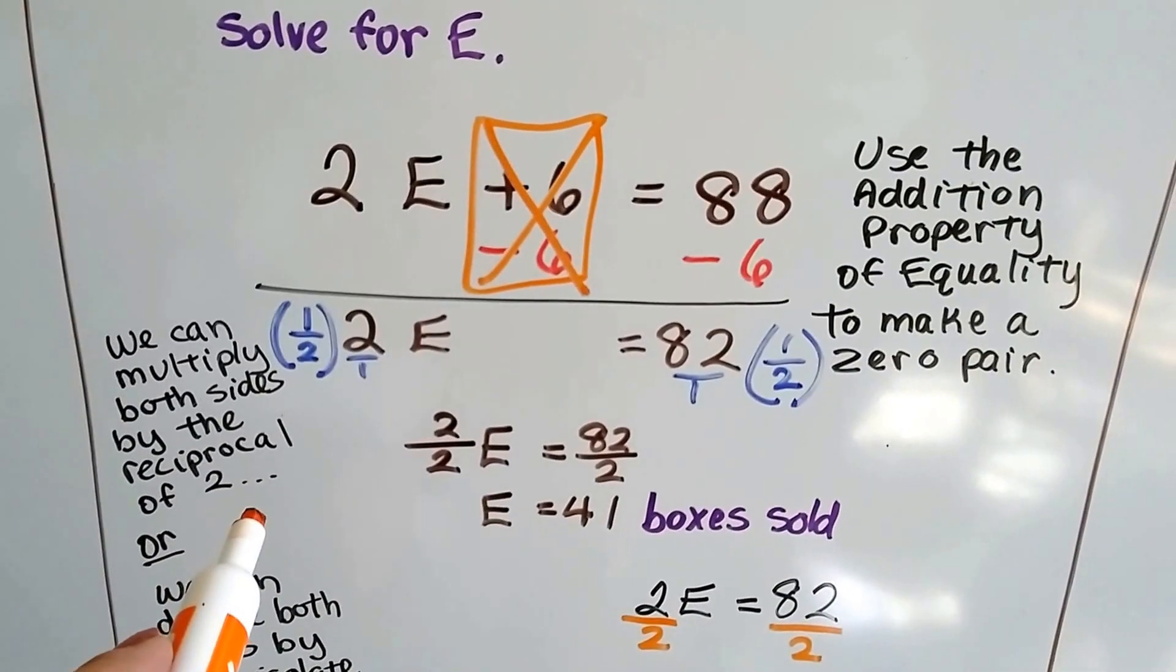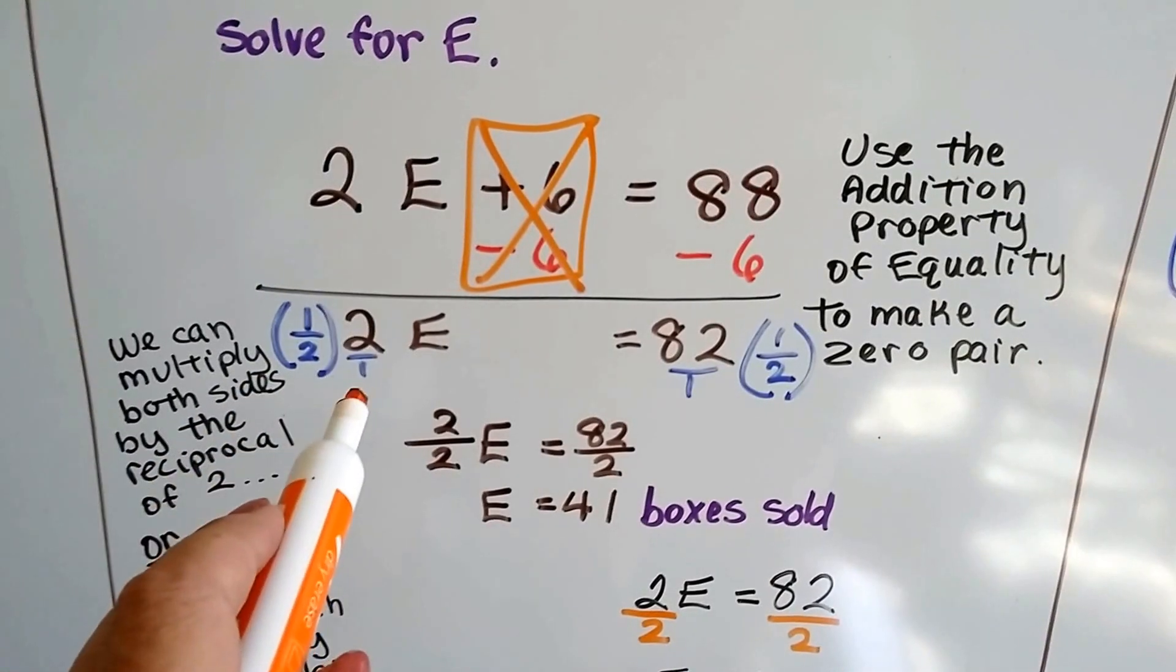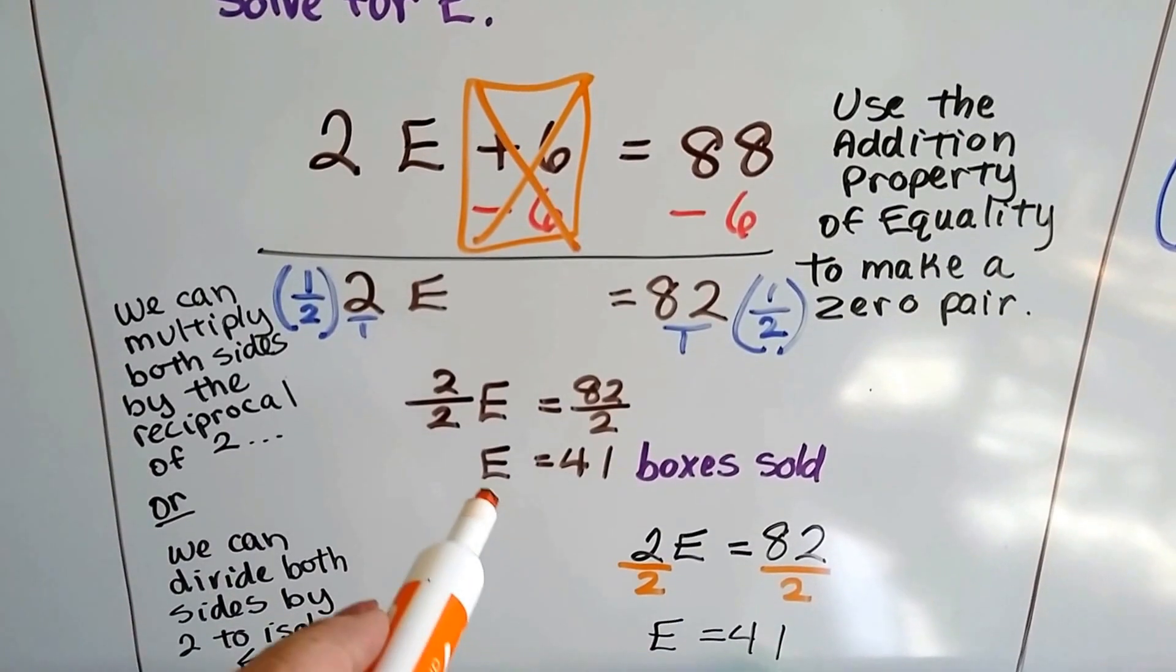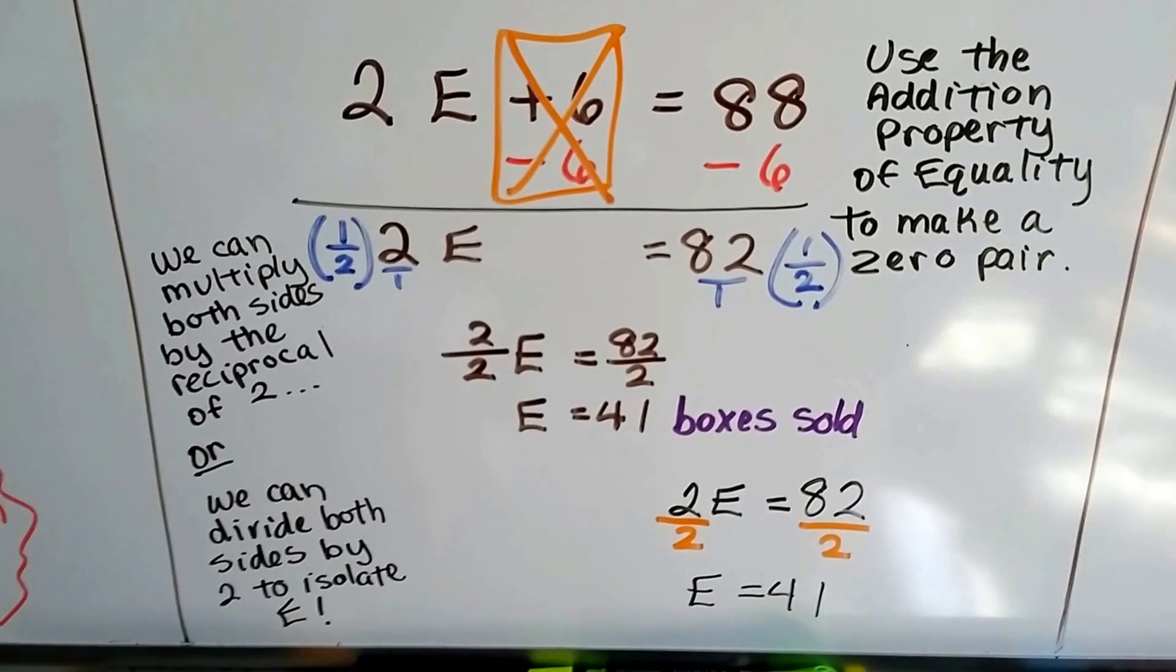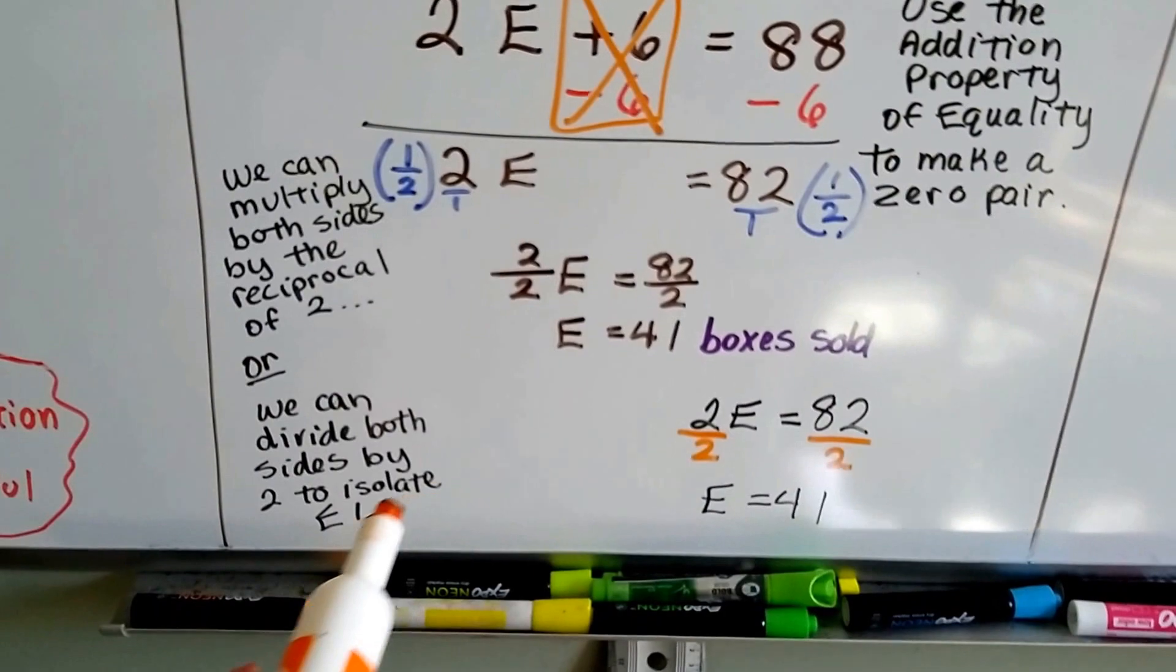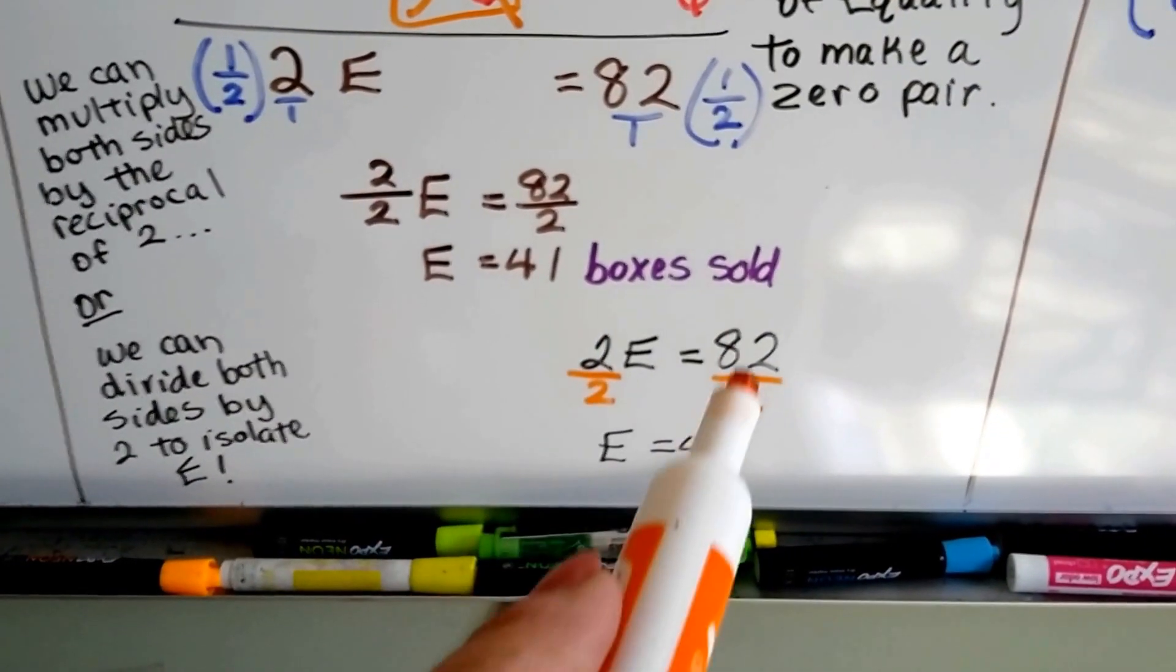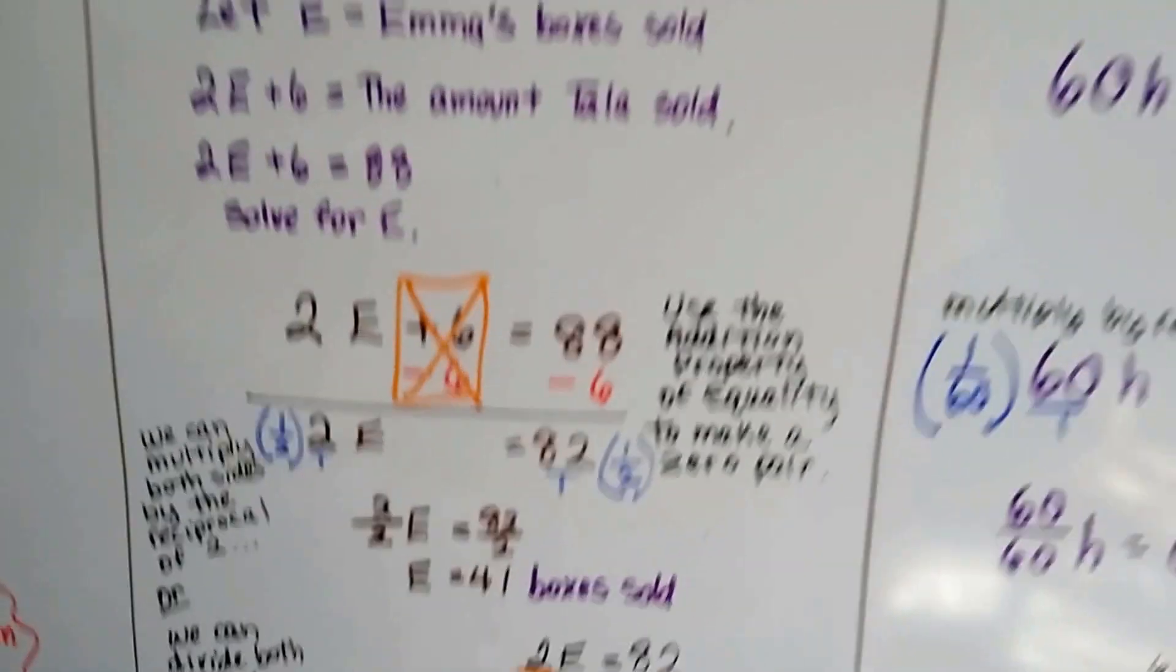Now all we have to do is multiply both sides by the reciprocal of 2, which is a half. It's the flipped around version of 2 over 1. We do it on each side. We get 2 over 2E is equal to 82 over 2. We divide 82 by 2 and get 41. We know that Emma sold 41 boxes. Now we also know because these were whole numbers, 2E equals 82, it wasn't a fraction that we could have just divided both sides by this coefficient, this 2, to get a quicker answer. Let's look at another one.